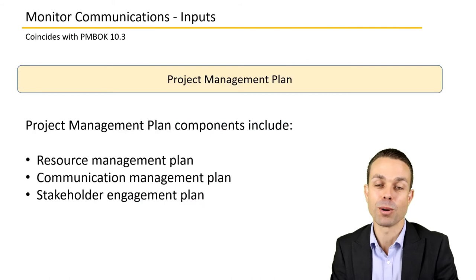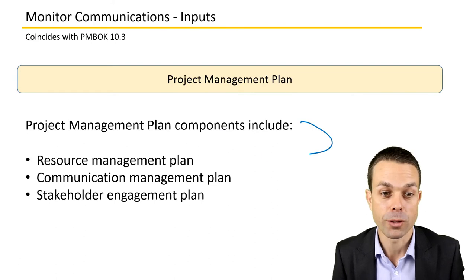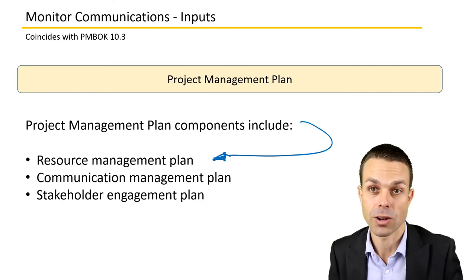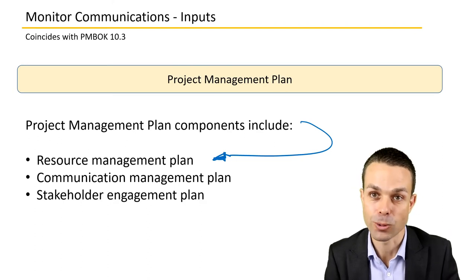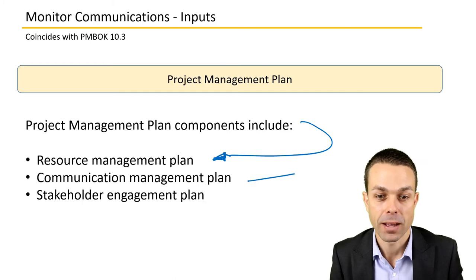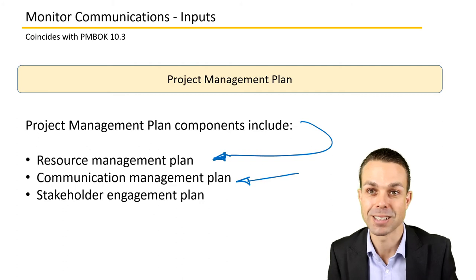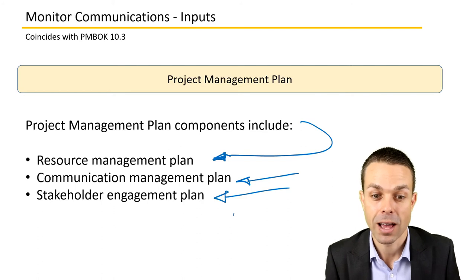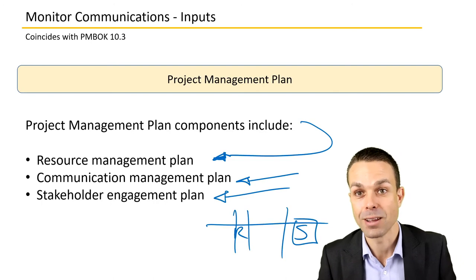Looking at the inputs for monitoring communications more closely, the project management plan components include the resource management plan — how we agreed to manage and gather resources, and whether we need to communicate to those people. The communications management plan covers the process we agreed upon to manage and monitor communications. And of course the stakeholder engagement plan: how did we agree to engage our stakeholders? Are they coming along the journey, resistant, or supportive?